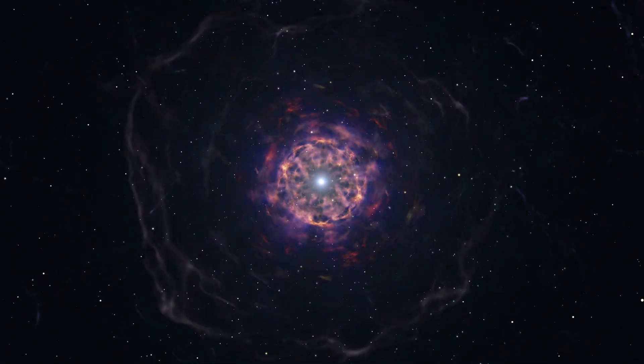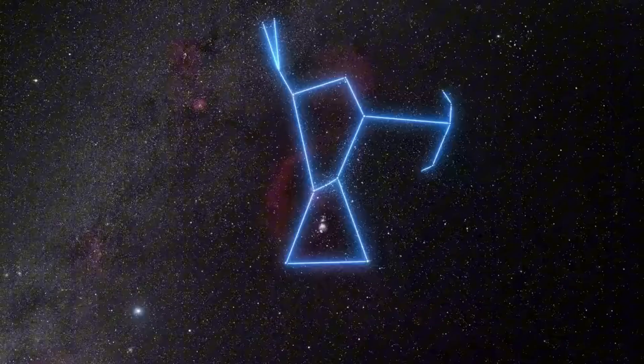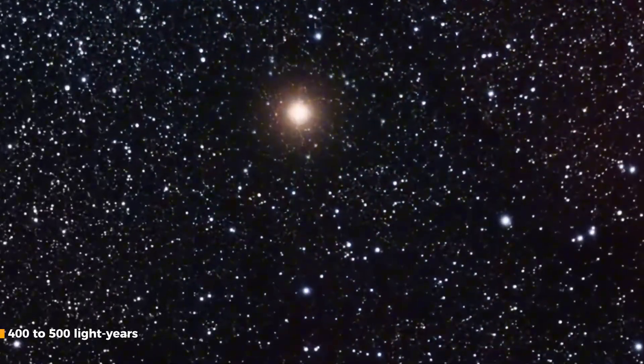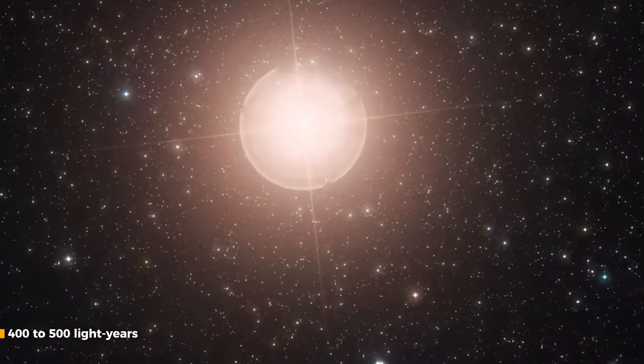Then there is the red supergiant, Betelgeuse, perhaps the most famous of stars that are supposed to go supernova in the future. Betelgeuse lies in the Orion constellation at a distance of 400 to 500 light-years from us.